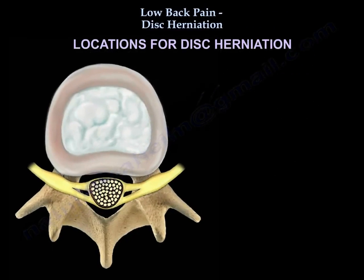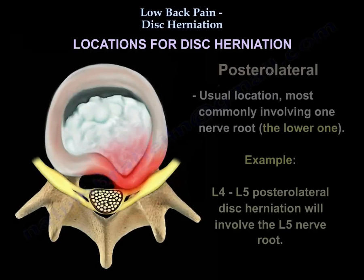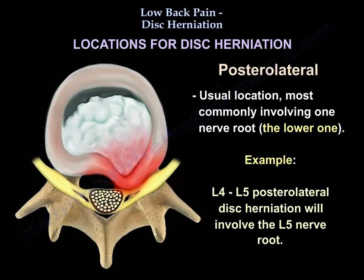The most common location of disc herniation is posterolateral. As you can see from the diagram, it affects the nerve root and most commonly involves one nerve root — the lower one. For example, an L4-L5 posterolateral disc herniation will involve the L5 nerve root.